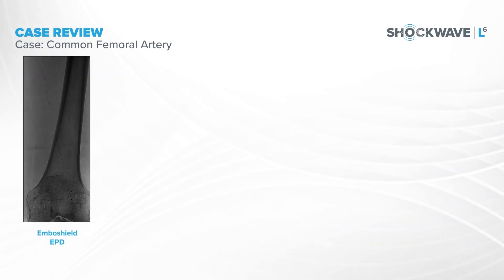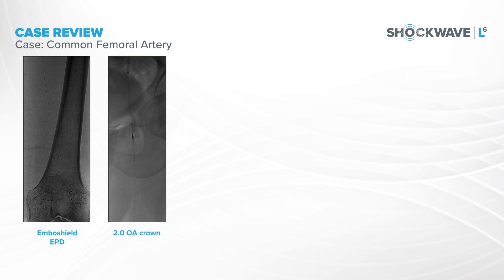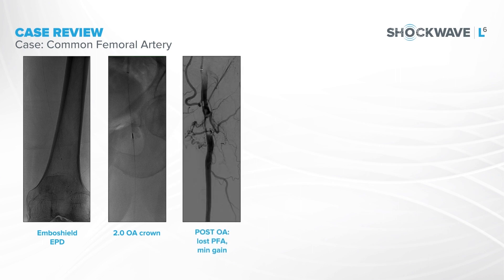Fortunately, he had really nice runoff distally. Once we crossed that occlusion, we elected to place an embolic protection device and decided to make a small pilot channel with a 2-millimeter orbital atherectomy device. After the orbital atherectomy device, we have a nice channel through there.